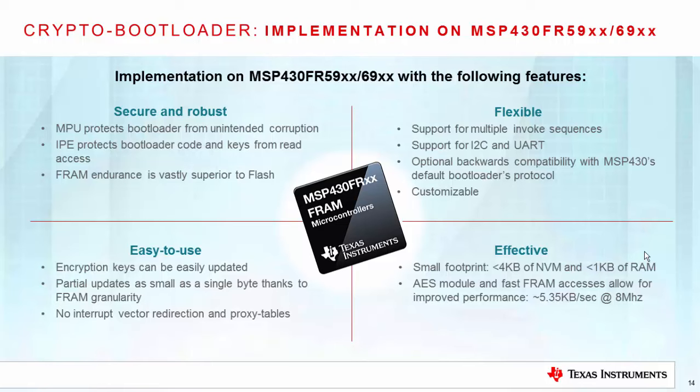Easy to use. The bootloader provides a method to update the encryption keys, which is not only simple, but improves the security of the implementation. This easy implementation is achieved thanks to FRAM's second advantage, which is granularity. FRAM provides the capability to write single bits without having to erase large memory sectors. This allows the bootloader to easily update single bytes without having to perform a sector or mass erase of the device. Thanks to FRAM, we can also write the interrupt vectors directly, without having to worry about vector redirection or proxy tables, which are usually needed for bootloaders implemented in main memory.